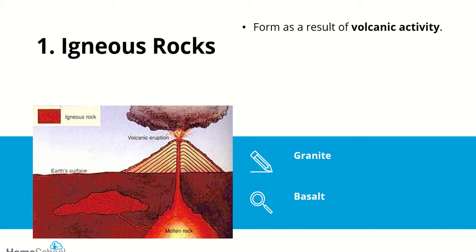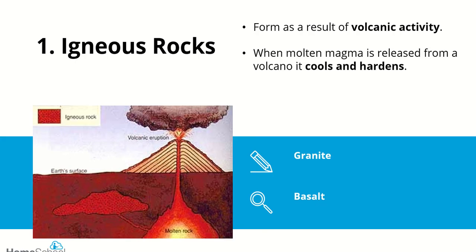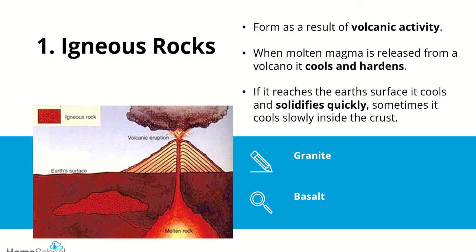Igneous rocks form as a result of volcanic activity — lava comes to the earth's surface, cools, and hardens into rock. Sometimes magma can cool slowly inside the crust; that's called an intrusive igneous rock. If it forms on the earth's surface it's known as an extrusive rock — it cooled quickly, in a couple of days, and formed rock. Two examples of igneous rocks are granite and basalt.